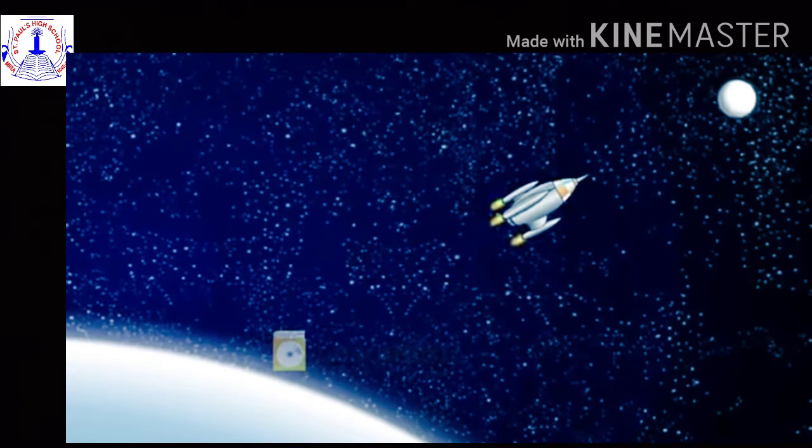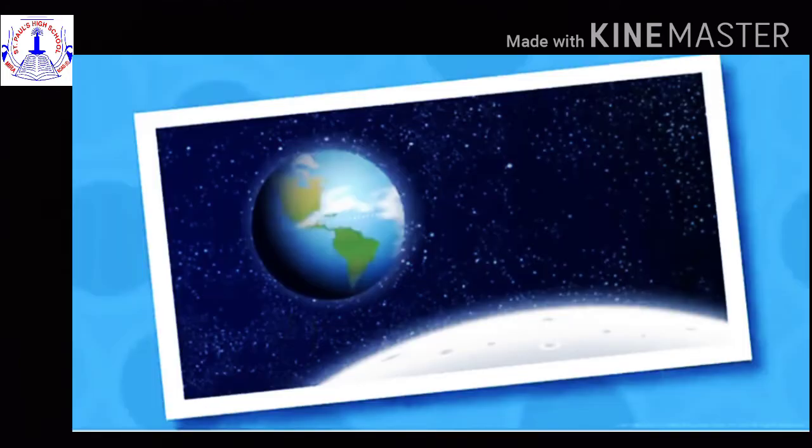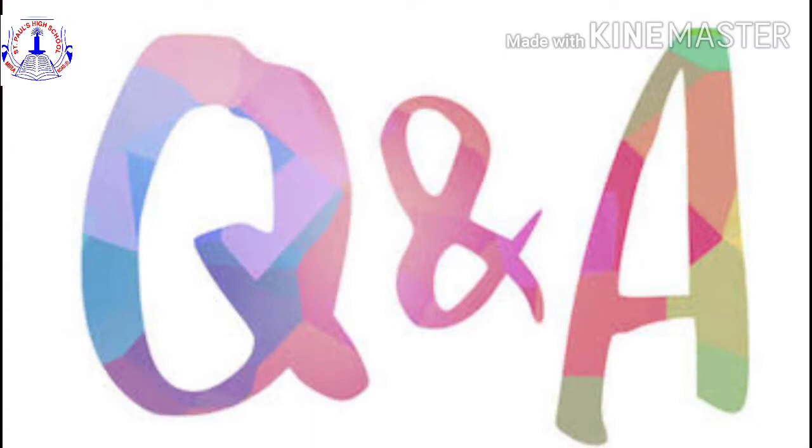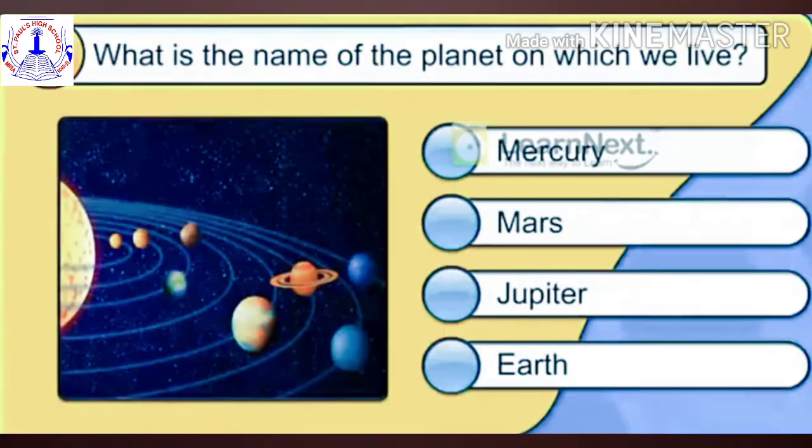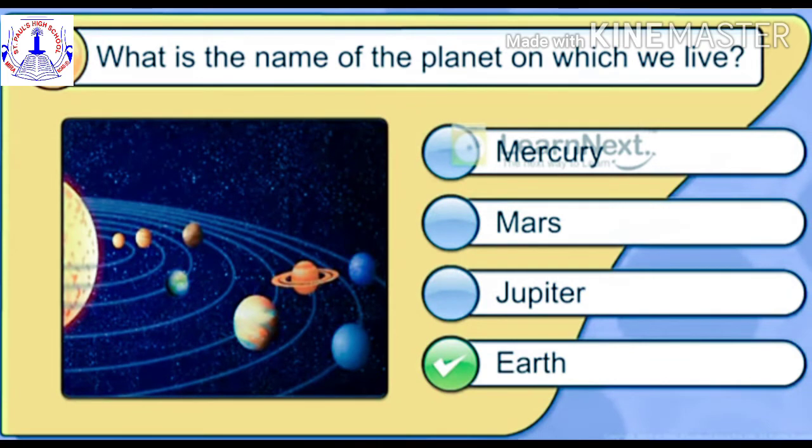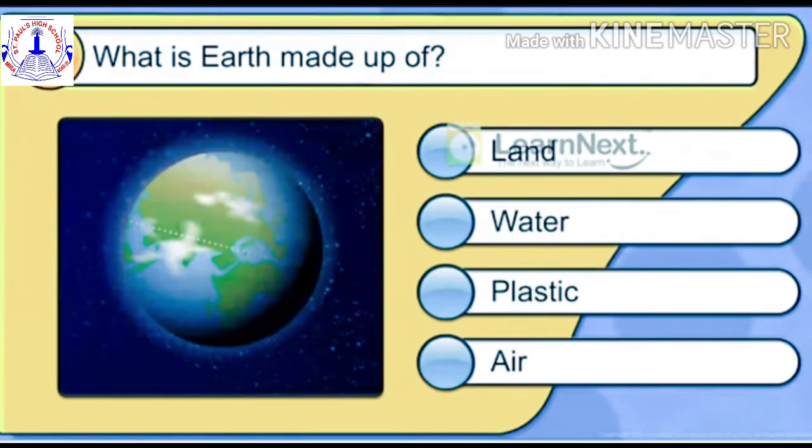Very recently, people have traveled to the moon and clicked pictures of the Earth, which is round in shape. Let us try to answer a few questions. First, what is the name of the planet on which we live? Correct, the name of the planet on which we live is Earth. Second, what is Earth made up of?